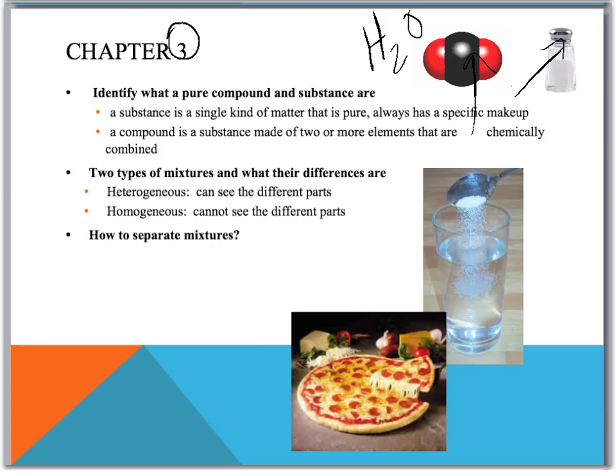Types of mixtures and what their differences are. If you remember, we went through quite a few of these. Heterogeneous, we can see the different parts. And would this be pizza or salt water? Going to be the pizza. Homogeneous, you cannot see the different parts.